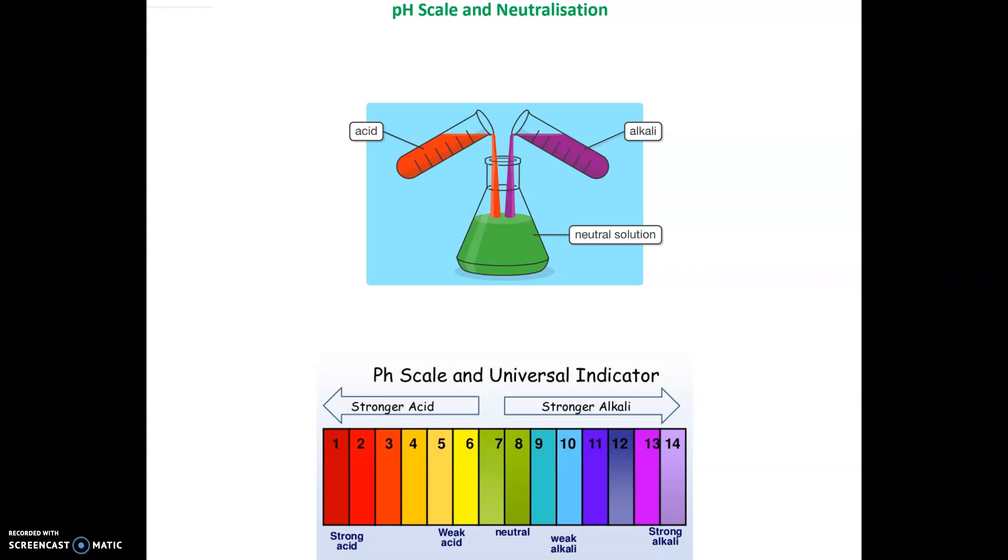Welcome back to Pure Science Education. Today we're looking at pH scale and neutralization. This topic comes up at Key Stage 3 and Key Stage 4. Let's look at what acids and alkalines are.